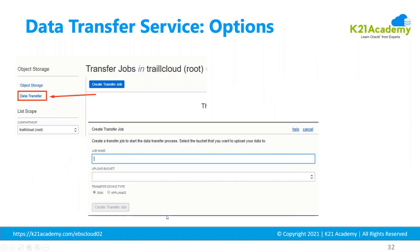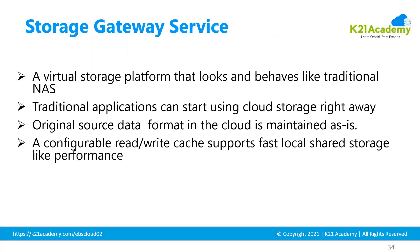You can monitor everything from the portal. You need to create a transfer job and then you can see all the details for both disk and appliances options.